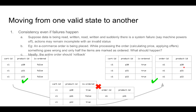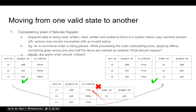While both the state on the left and the state on the right are completely valid states, because of the system failure in the middle, maybe all of the items in the tables might not get updated and we might end up with a state where not all the is_ordered values are updated and all the new rows have not been created.